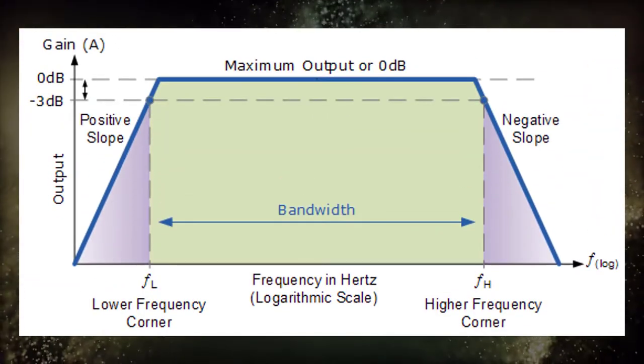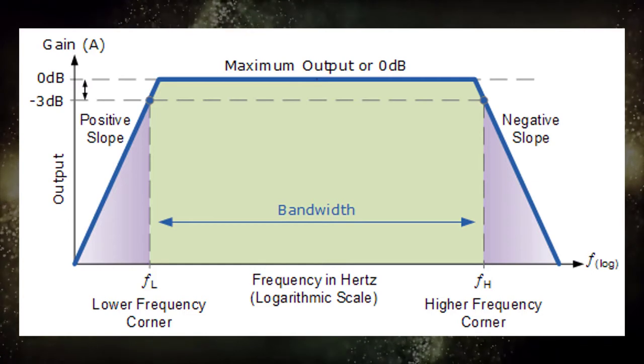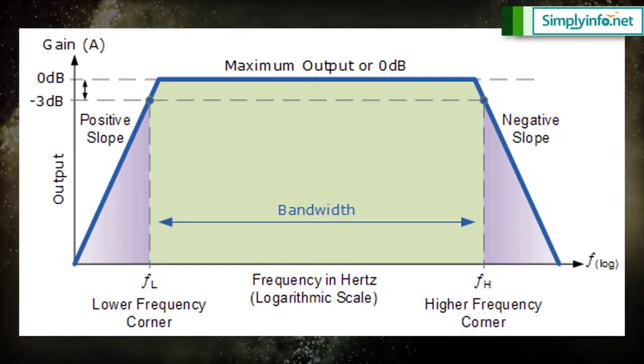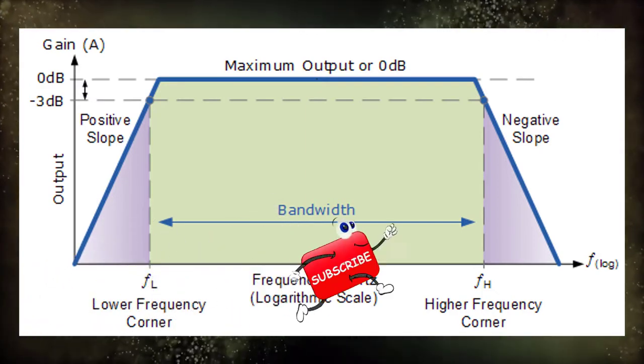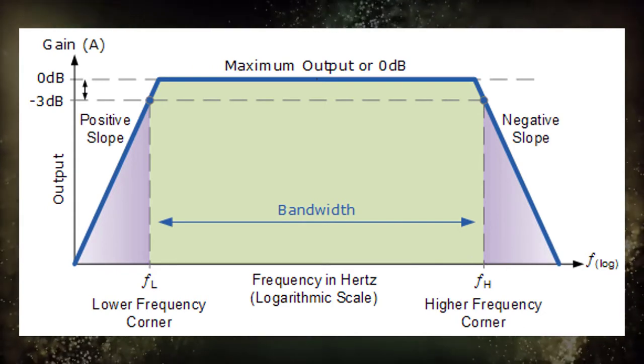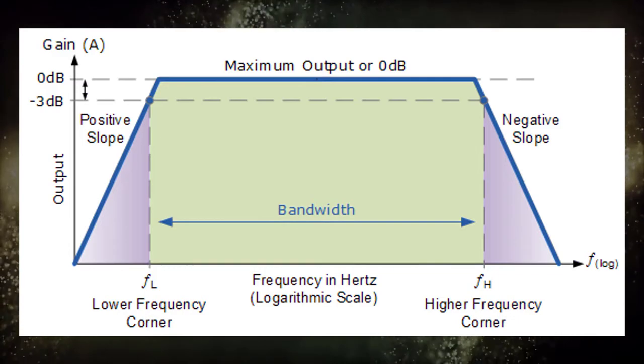The horizontal frequency axis is usually plotted on a logarithmic scale while the vertical axis representing the voltage output or gain is usually drawn as a linear scale in decimal divisions. Since the system gain can be both positive or negative, the y-axis can therefore have both positive and negative values.